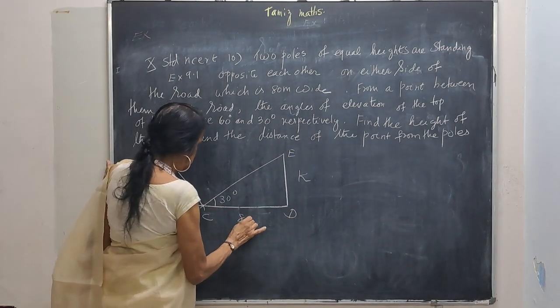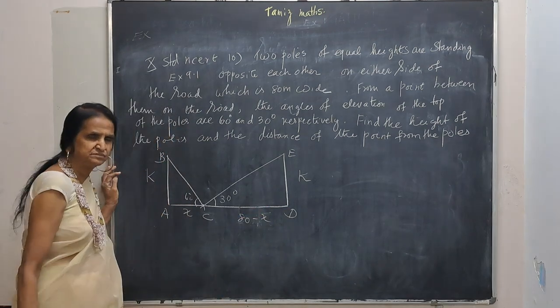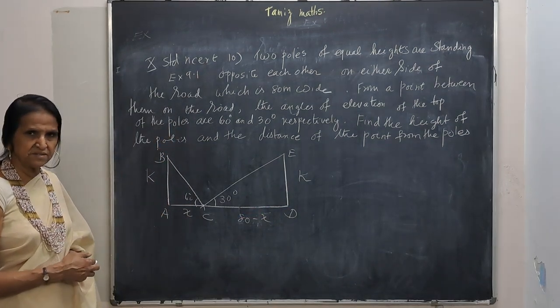So this will be 80 minus X. So one is X, another is 80 minus X.